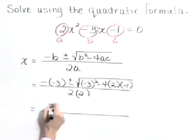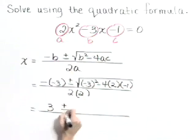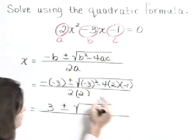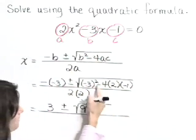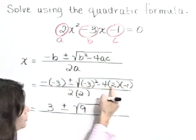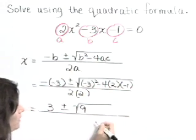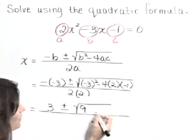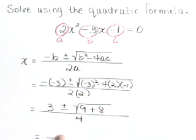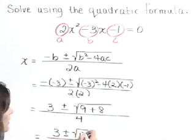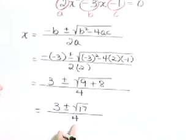The opposite of -3 is 3 plus or minus, underneath that radical, (-3)² is 9 minus 4 times 2 times -1 is minus a negative 8 or plus 8, all over 4. This gives 3 plus or minus the square root of 17 all over 4.